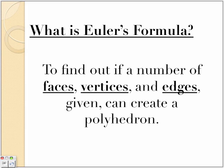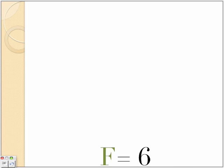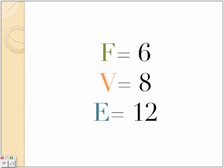So what is Euler's formula? Euler's formula is to find out if a number of faces, vertices, and edges given can create a polyhedron. So here's our first equation.